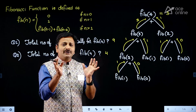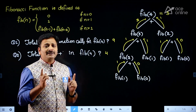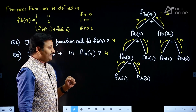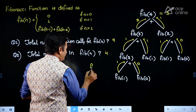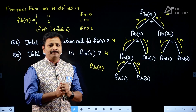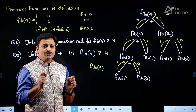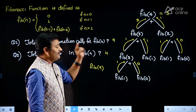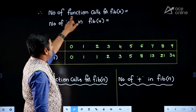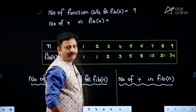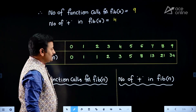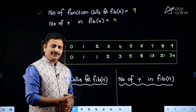In this example we computed the number of function calls manually by drawing the recursion tree. But from an examination point of view, we may not have enough time to draw the recursion tree if the input value is large. For example, if instead of Fib of 4 they ask Fib of 9, it is very difficult to draw the recursion tree. So for that purpose I am introducing a shortcut method for computing the number of function calls for Fib of n.